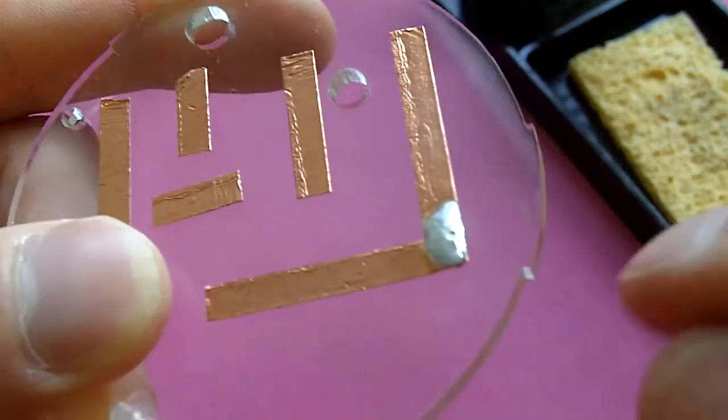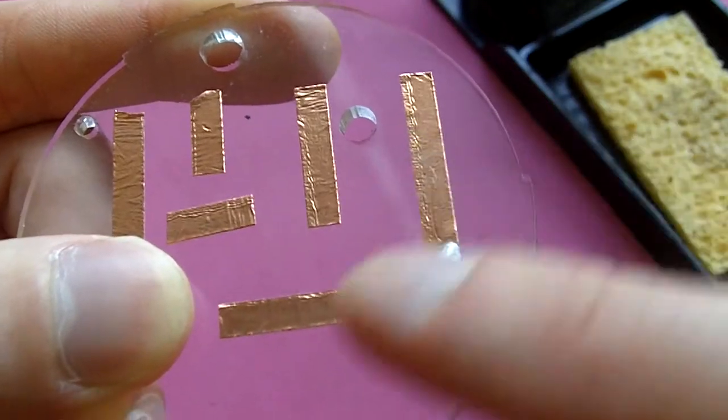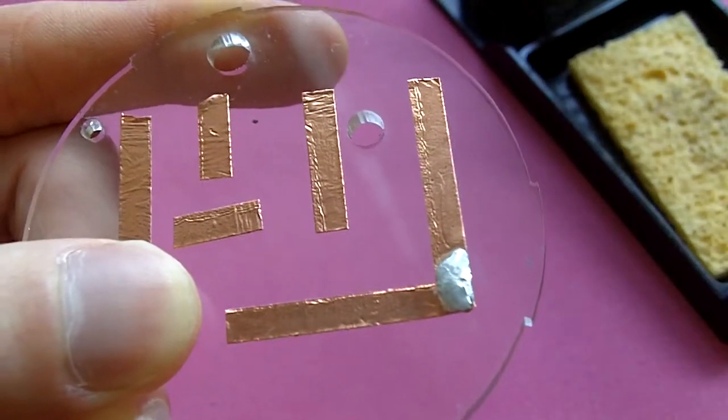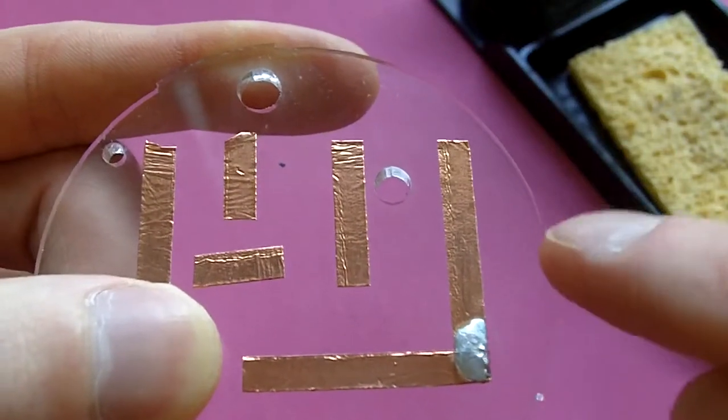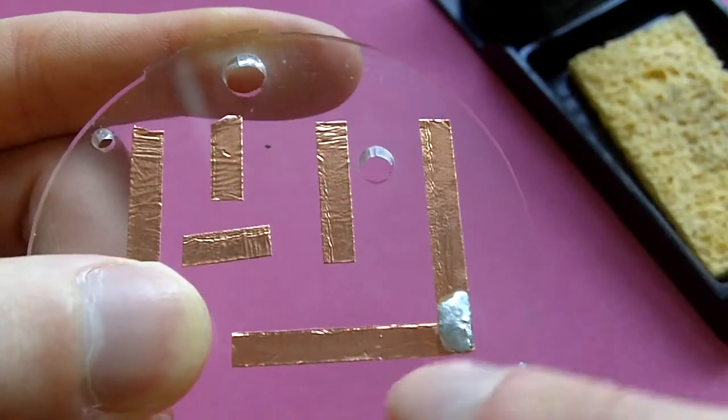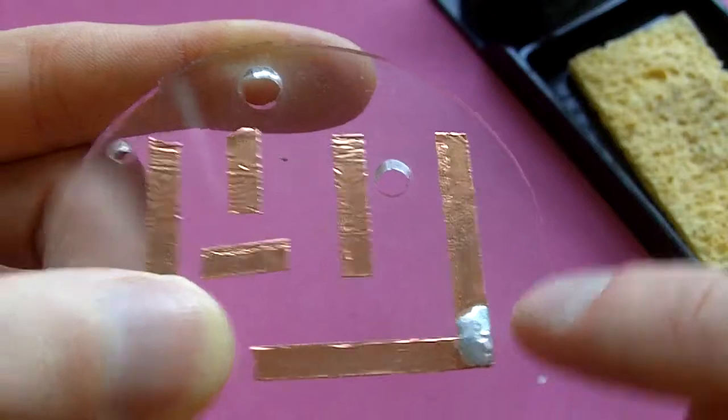We can see looking closely we've got a nice blob of solder that connects this strip to this strip. It depends which direction or which way you put on the tape as to which way this blob needs to stretch.